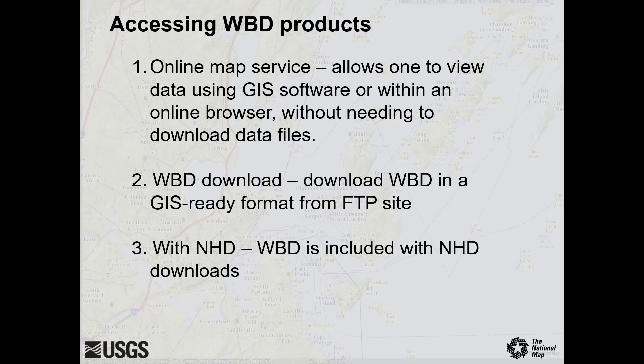Most National Map digital products are typically used either by viewing the data through an online mapping service or by downloading the actual data files. WBD adds a third option as it is also packaged with hydrography data. Online map services allow you to view data in GIS software such as ArcMap or Global Mapper, or on map viewer websites without needing to download data files. Standalone WBD without NHD data can be easily downloaded from the USGS FTP site or from the Amazon Cloud, ready to use in GIS software. WBD is also included with the NHD data downloads, since NHD is organized by watershed, making WBD a natural accompanying dataset.